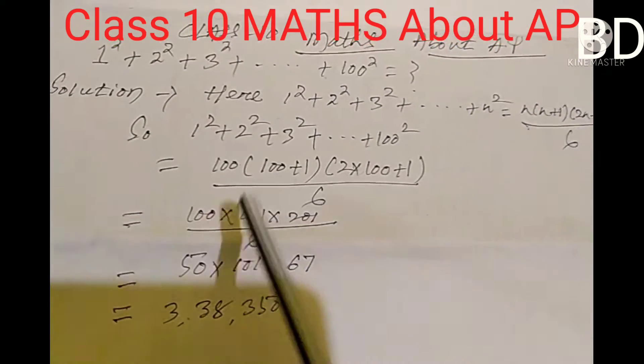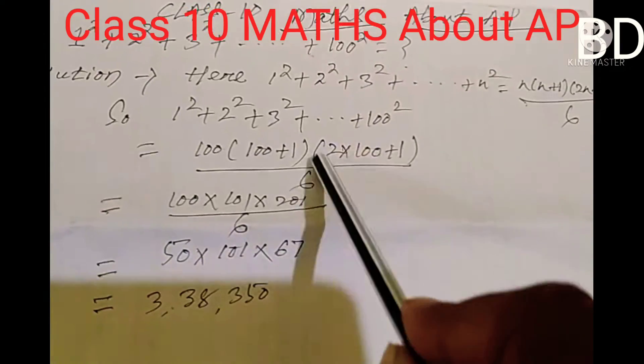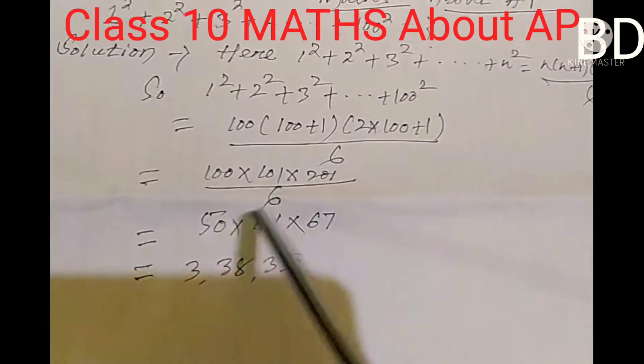We get 100 multiplied by 101 multiplied by 201 divided by 6.